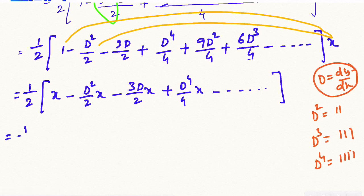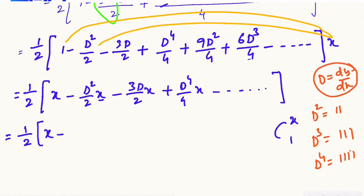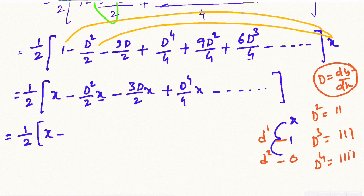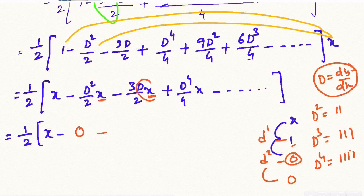Now, with the main formula, you apply differentiation to x. The first differentiation of x is 1, the second differentiation is 0, and the third time is also 0, because the constant value differentiates to 0. So D·x = 1 and D²·x = 0. Therefore (3/2)·D·x = 3/2, and the D⁴ term gives 0.